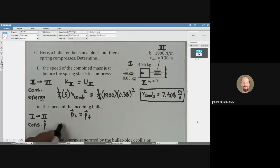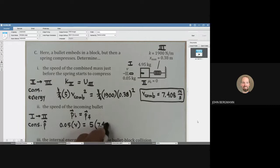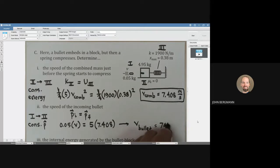The mass of the bullet is 0.05. The incoming speed of the bullet, we don't know. The mass of the block and the bullet together is five kilograms, and they start scooting off initially at that first instant with a speed of 7.408 meters per second. With a calculator, the speed of this bullet turns out to be about 741 meters per second.